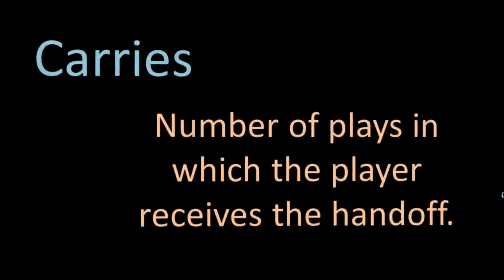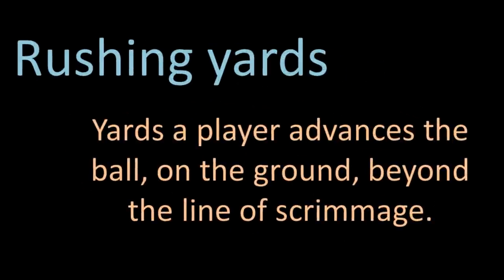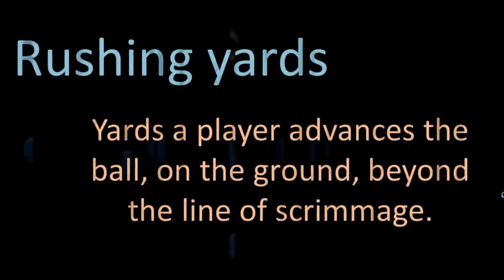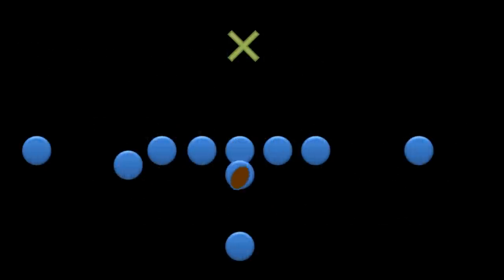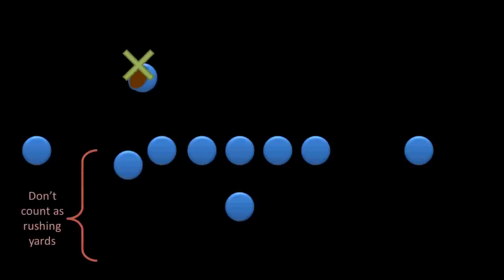We'll start with the running backs. The simplest stat for rushers is carries, which is simply the number of plays in which they receive the handoff or carry the ball. Another common stat would be the number of rushing yards a player has. A key element to remember from this stat is that the number of yards starts at the line of scrimmage. So even if the running back receives the handoff 5 yards behind the line of scrimmage and runs forward 10 yards, it will technically have been a 5 yard run.